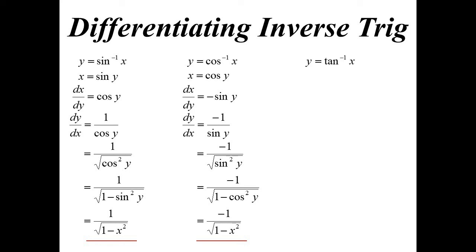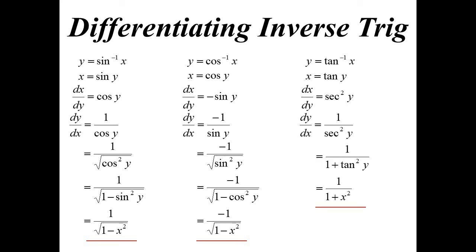Inverse tan: make x the subject. Differentiate tan and we get sec squared, so the derivative is 1 over sec squared. This one's a lot easier to get x back in because it's already squared. Sec squared we know is 1 plus tan squared, so we get 1 over 1 plus x squared.